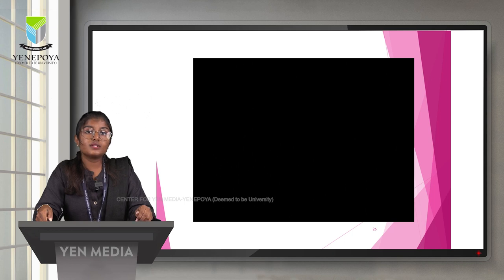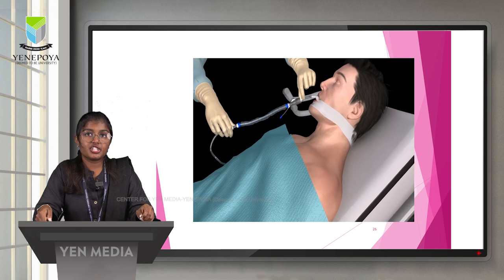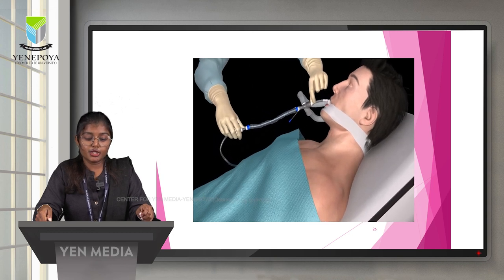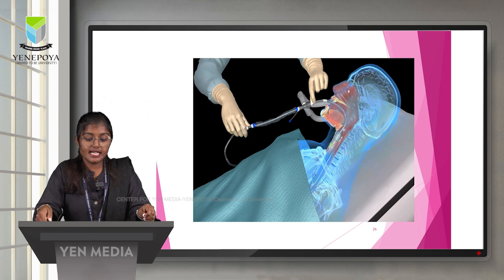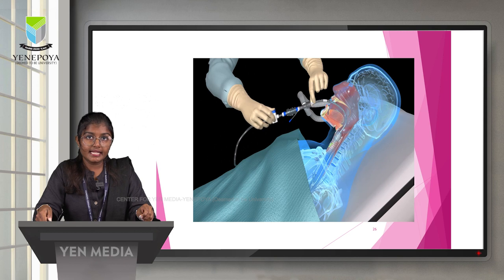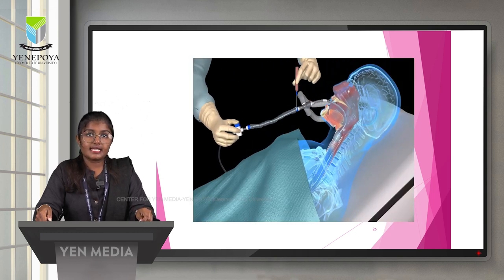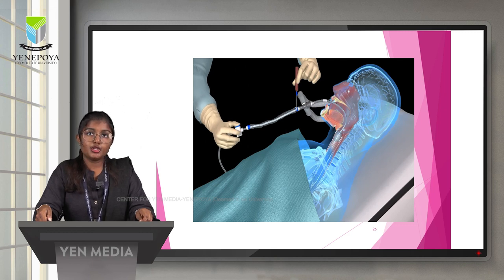Endotracheal tube closed suctioning: suction the patient's endotracheal tube only as clinically indicated and not on a routine fixed schedule. Apply the suction, then completely withdraw the catheter into the sleeve. Ensure the suction catheter is aligned with the saline flush port, then rinse the catheter and suction tubing.